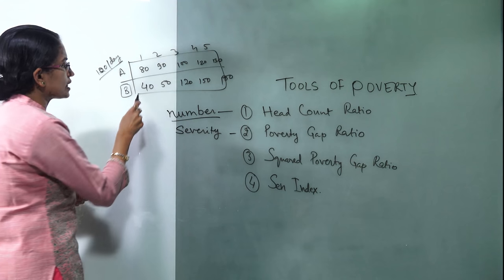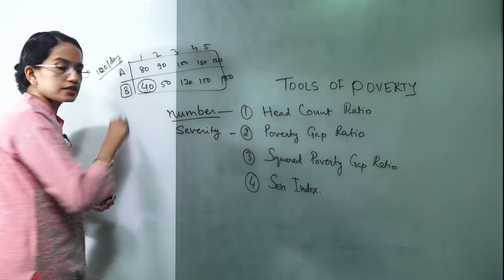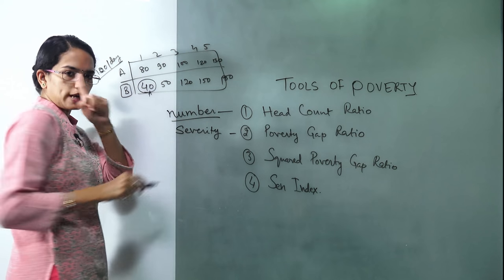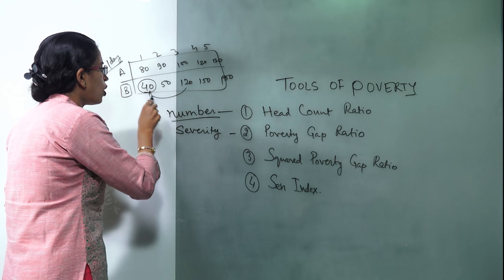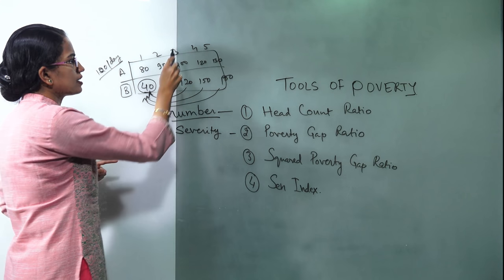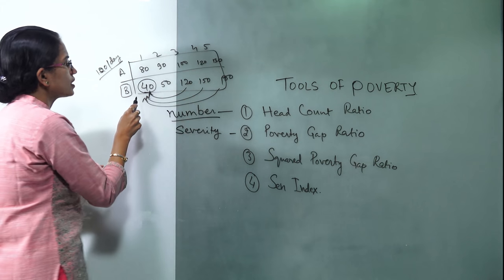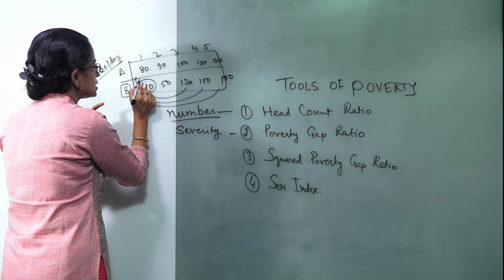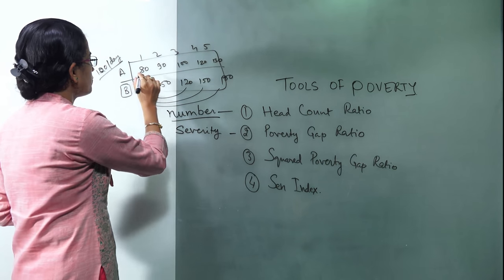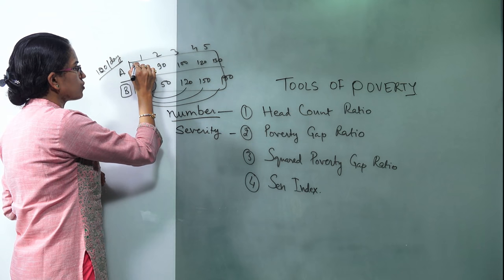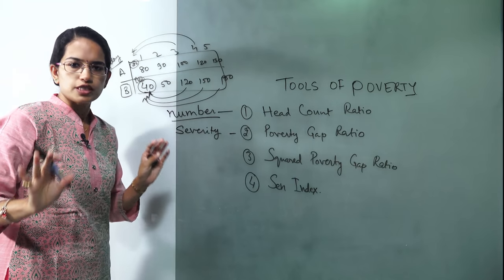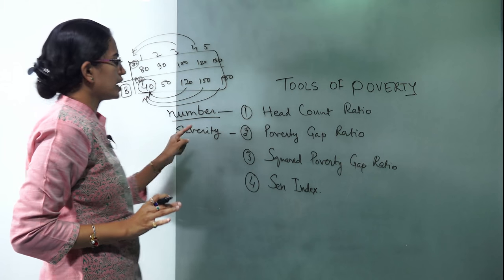Now to help uplift this one person in region B, a lot of input would have to go from the remaining persons three, four, and five to help him reach sixty more and attain a level of hundred. However, in case of A it would require only twenty more, so a little input from three and a little input from four would suffice. So that's how we understand the poverty gap ratio and it talks about the severity of poverty.